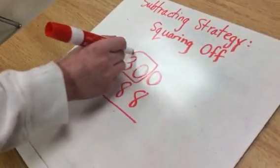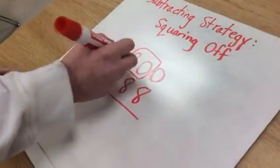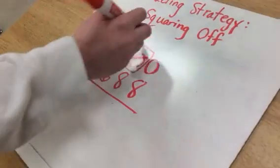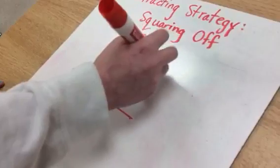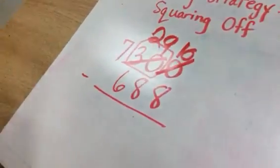So now you're going to square that off, and then this isn't 30 anymore. This turns into 29, because you're giving 1 to this 0, and then now you can start the subtracting.